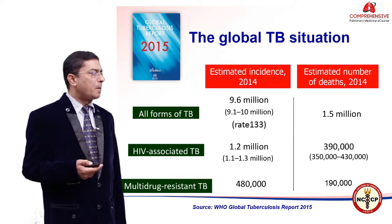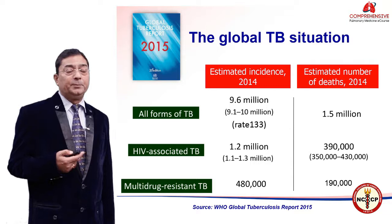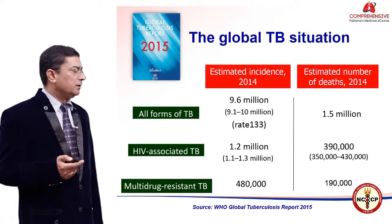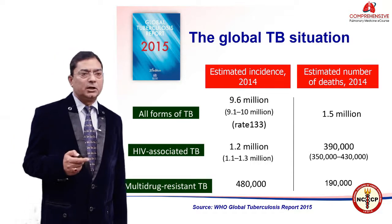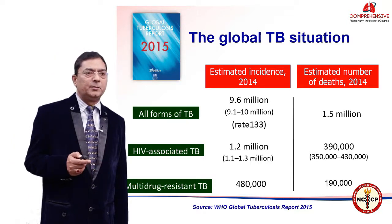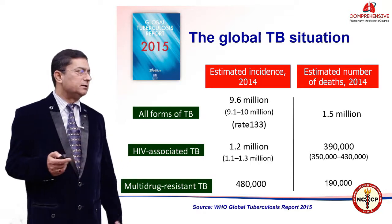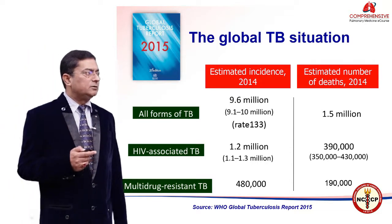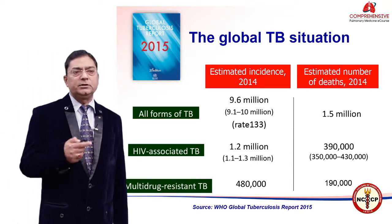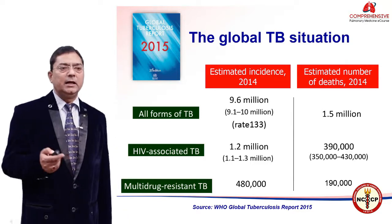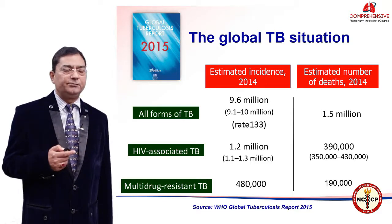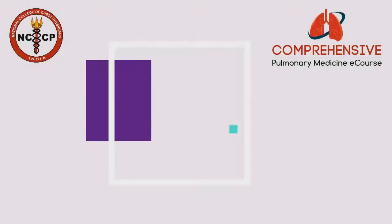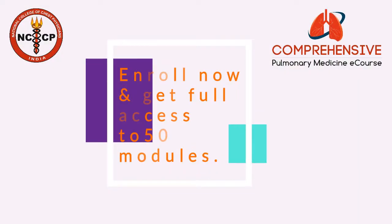That represents roughly 15% mortality due to tuberculosis. Looking at the drug resistance scenario, in multi-drug resistant tuberculosis there are approximately 4,80,000 cases and roughly 1,90,000 deaths. So the death rate in MDR cases is roughly one-third.